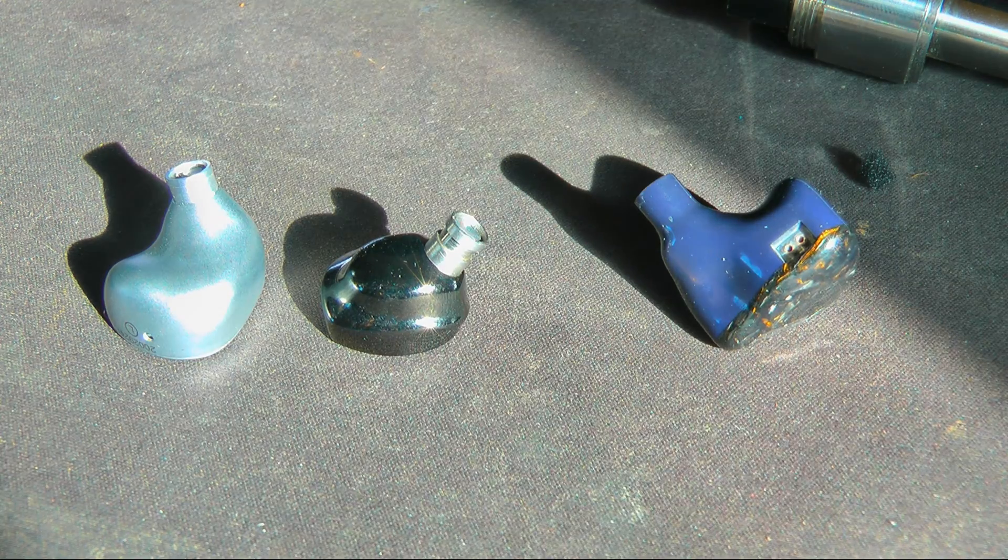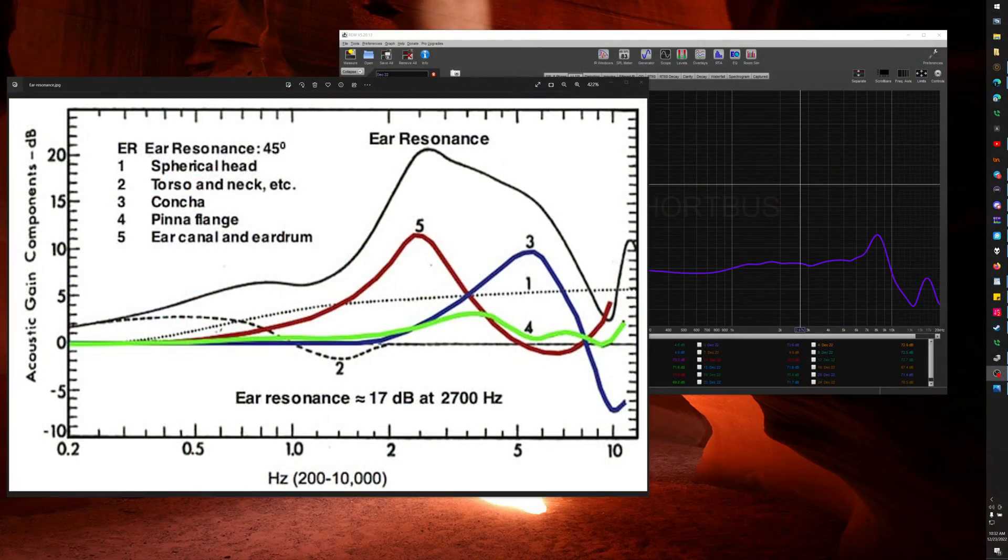So let's go over to this. This is an ear resonance chart made by Etymotic probably in the 90s. And I'm not going to say what I think is necessarily perfectly correct on this or not, but I would say a couple things. So number five is the sort of the bump that we see in most headphones, and that is the ear canal and eardrum gain.